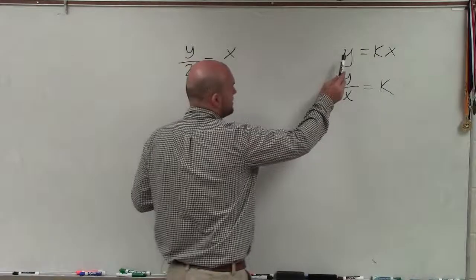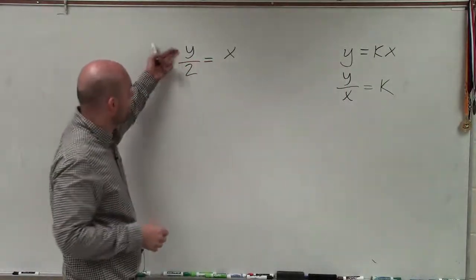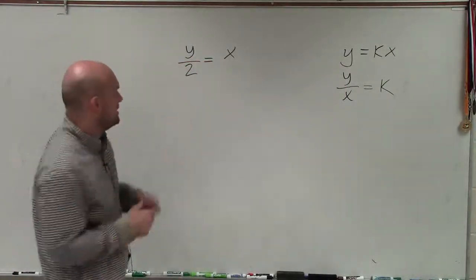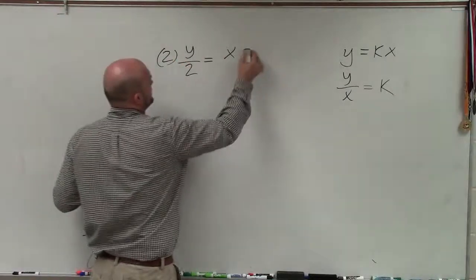So basically, you can see in one example, we want to be able to solve for y. So I see that my y is being divided by 2, so all I need to do to undo divided by 2 is to multiply by 2.